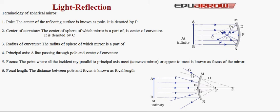Second is center of curvature. The center of the sphere of which the mirror is a part is known as center of curvature. It is denoted by C. This is the center of curvature for concave mirror, and this is the center of curvature for convex mirror.